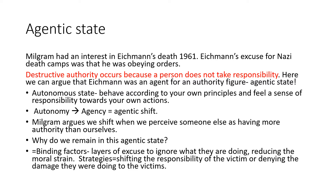The opposite to being in an agentic state is being in an autonomous state, where you behave according to your own principles and feel a sense of responsibility towards your actions. We call the shift from autonomy to agency an agentic shift. But why do we remain in the agentic state? The answer is binding factors — layers of excuse to ignore what you're doing — which reduce the moral strain, that feeling of 'I shouldn't be doing this', because we use strategies such as shifting responsibility onto the victim or denying the damage we're doing to them.